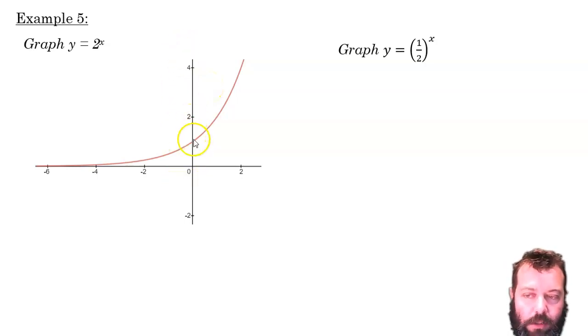It crosses the vertical axis, the y-axis here, at 1. That's because 2 to the power of 0 doesn't equal 0, that's a common mistake. 2 to the power of 0 equals 1. So that's why it crosses there. That's an important point here.